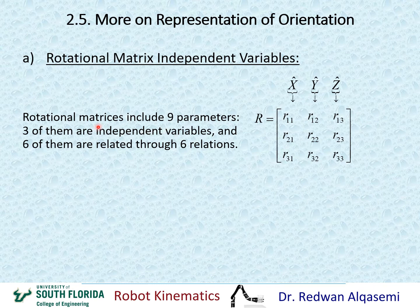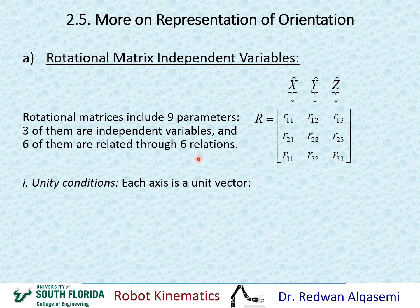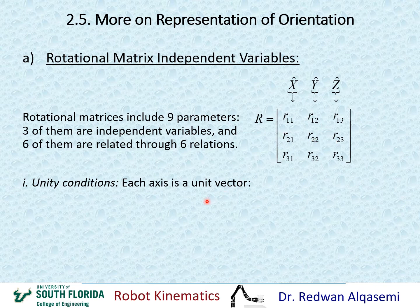If we have the three independent variables, then we can find six relationships that relate the other six parameters to those three independent variables. Let's see how we can find these six relationships. We start with the unity condition, which says that each one of these axes — X, Y, and Z — of any frame has a unit vector of length one.